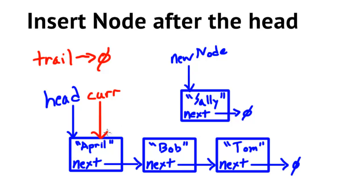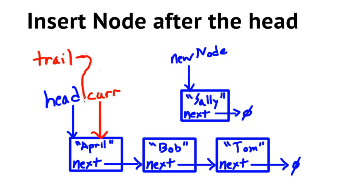We do the same traversal as before. We look at what current is pointing to and decide that Sally needs to come after April, so we need to update current. But before we update current to point to current's next, we must first update trail to point to what current is currently pointing to. If we don't do that — say we had a node like Kathy starting with C going between April and Bob — we would still need that trailing pointer and wouldn't have it.